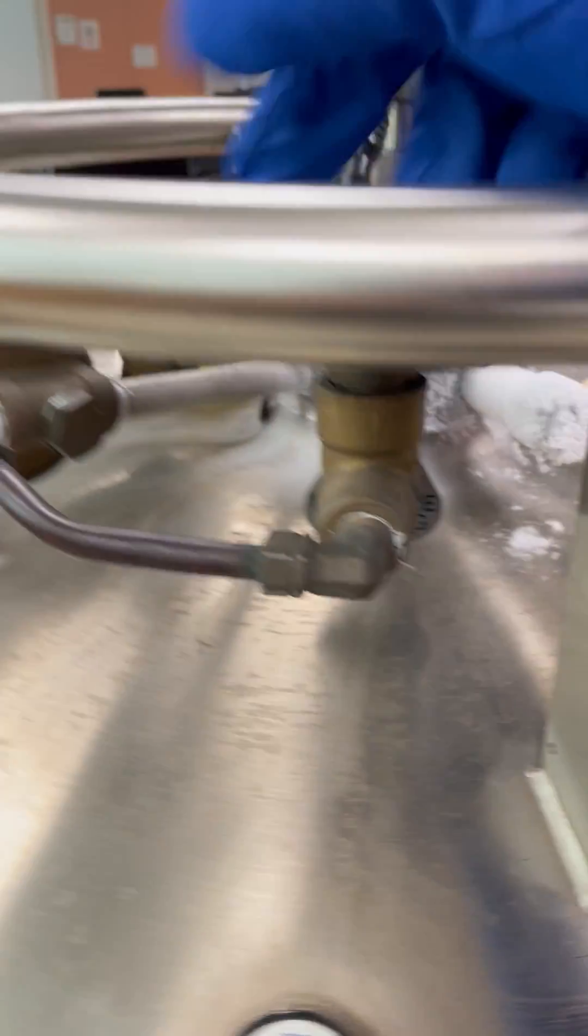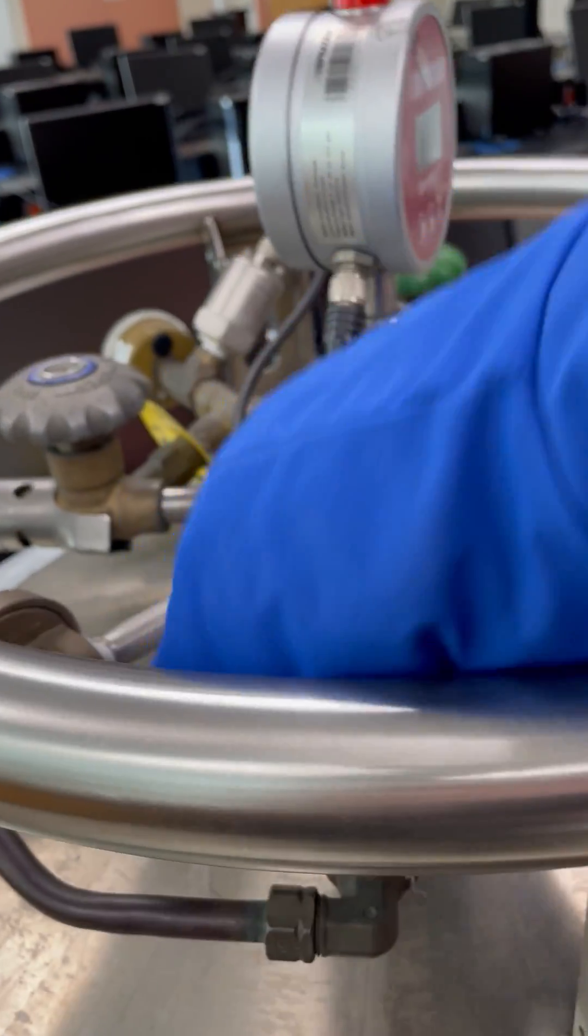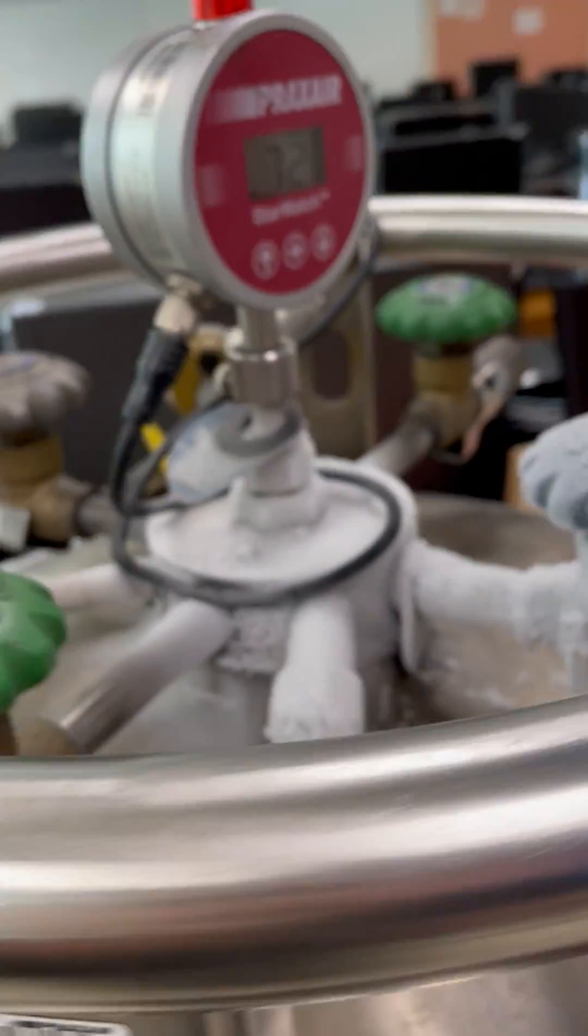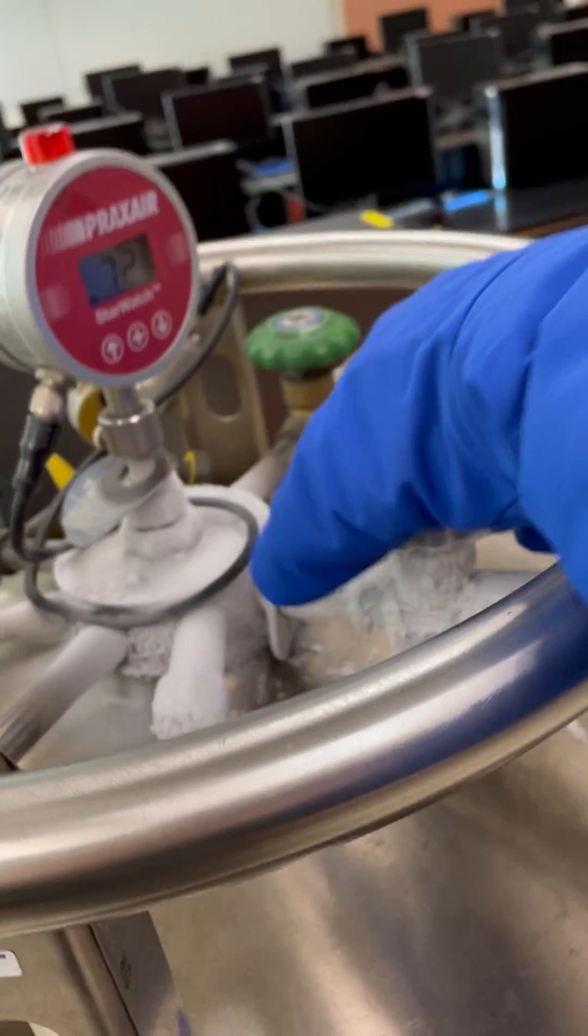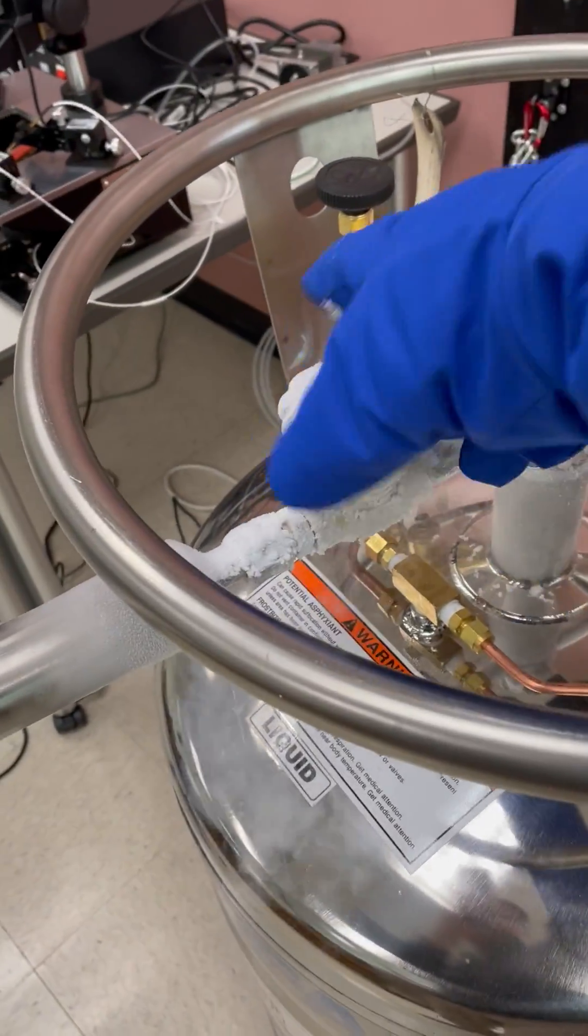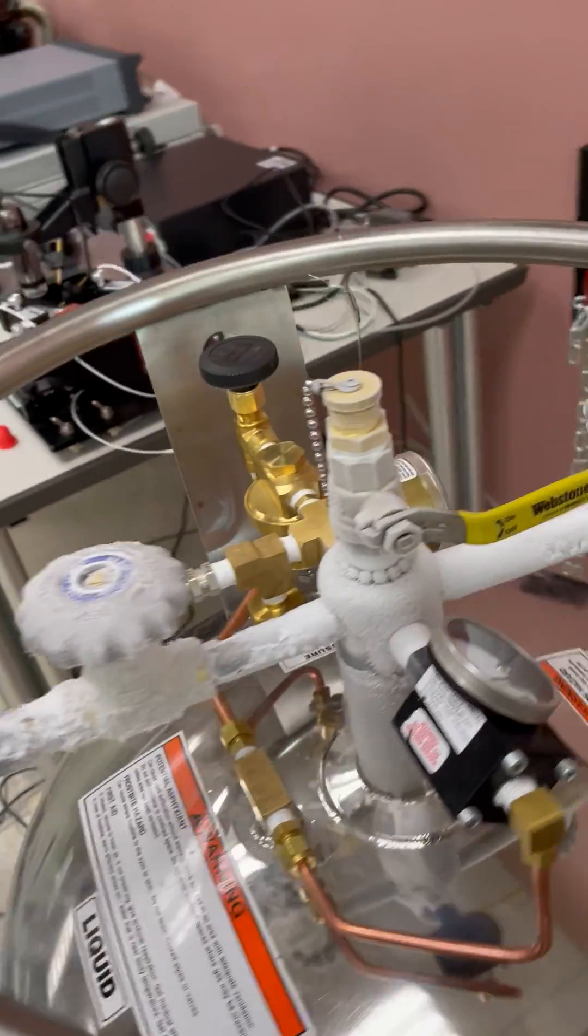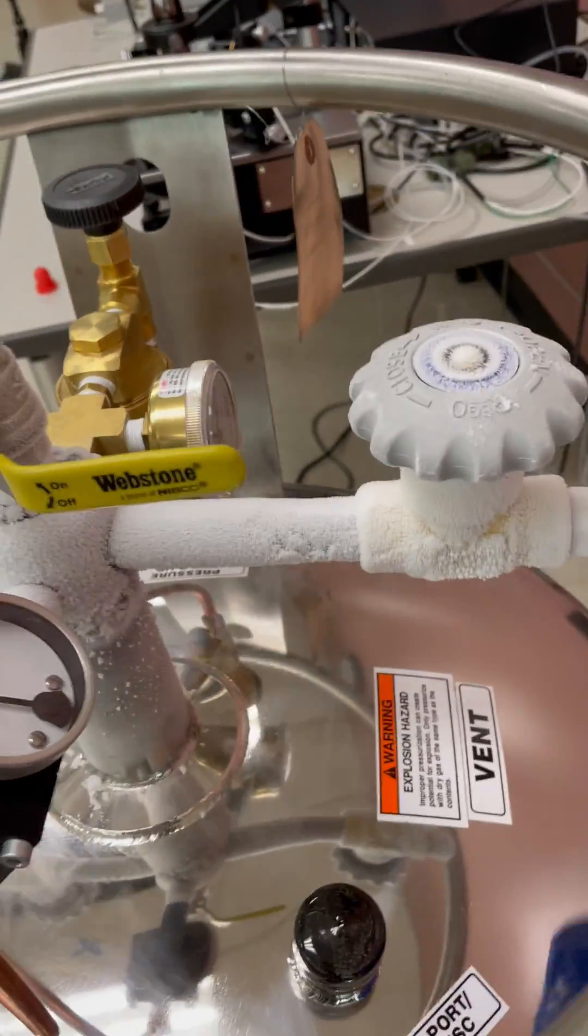Before you do the transfer, make sure that you have fully opened this pressure building valve, right? Fully open means anti-clockwise. And then you fully open this source, also anti-clockwise. And also the destination liquid valve, fully open it.